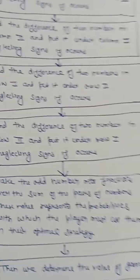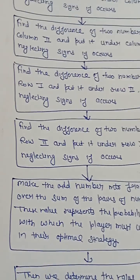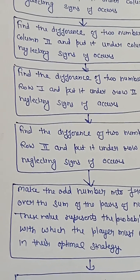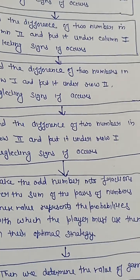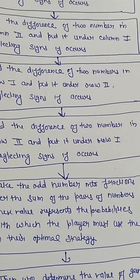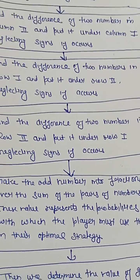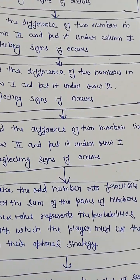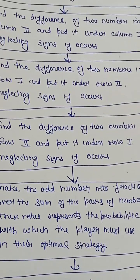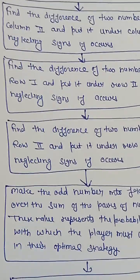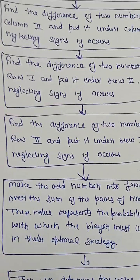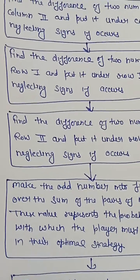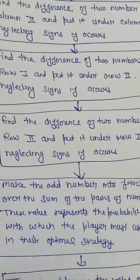Next step: make the odd number into fraction over the sum of pair of numbers. These values represent the probability with which the player must use them in their optimal strategy. With the help of odds, we can calculate the probability. After calculating the probability, we will find out the optimal strategy.